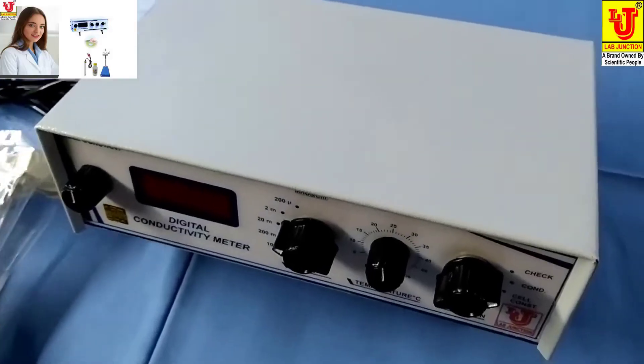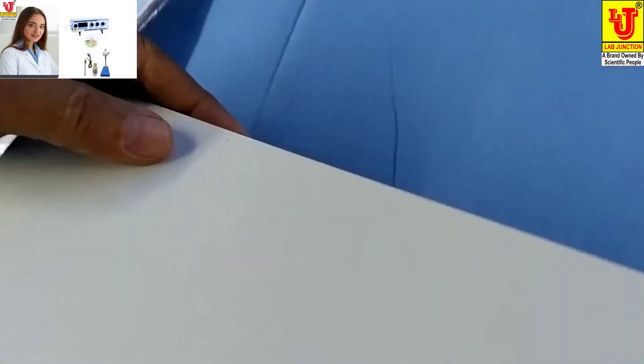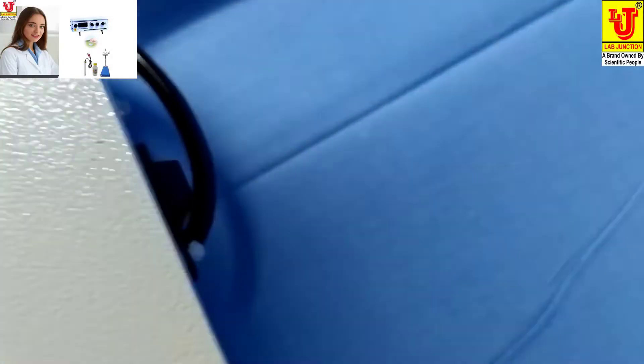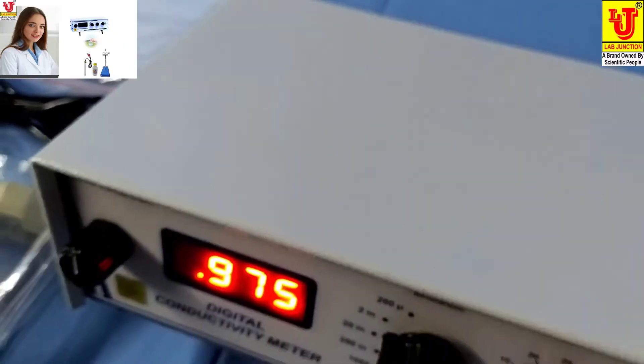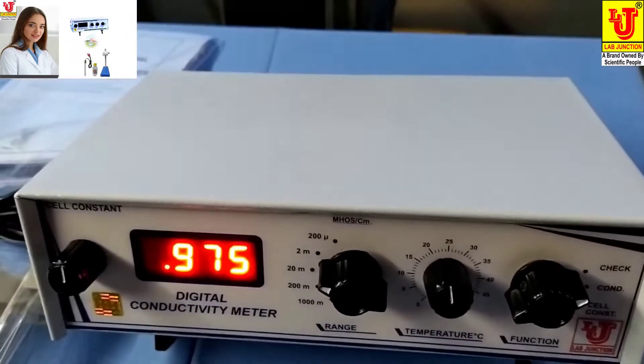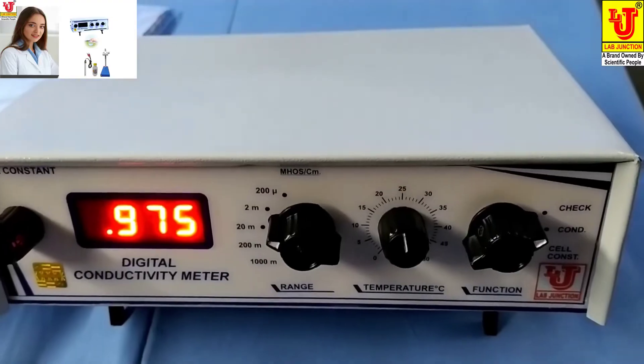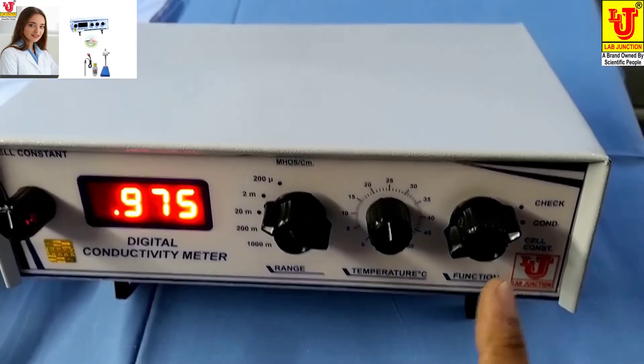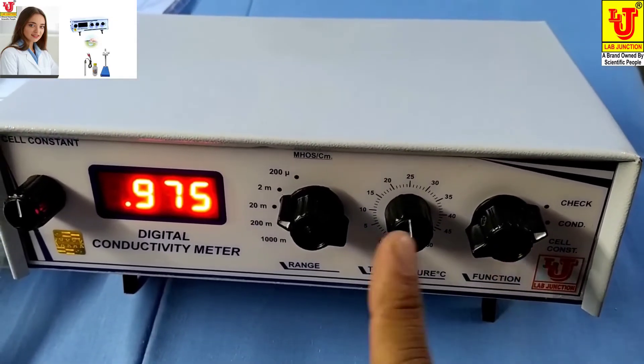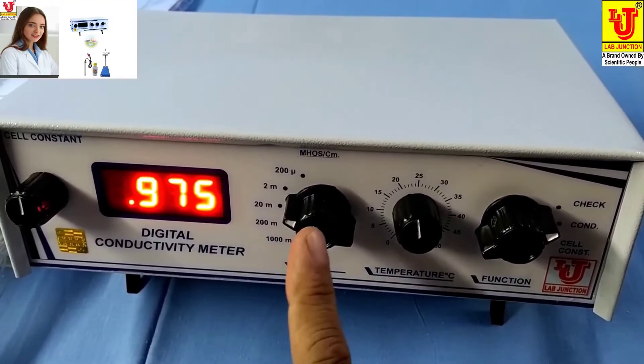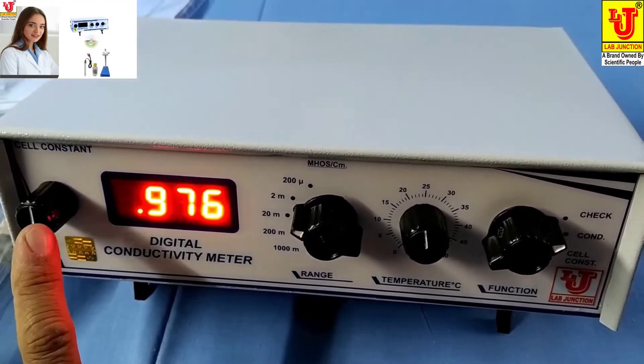Now I am switching on the machine. First, there are four controls: function control, temperature control, range switch, cell constant knob.